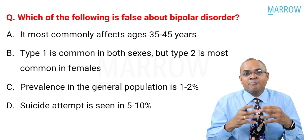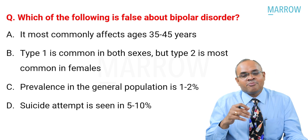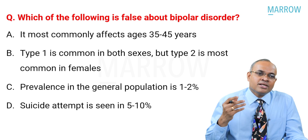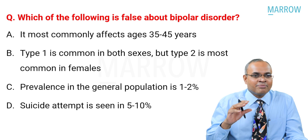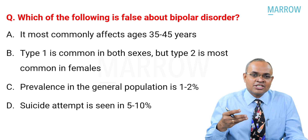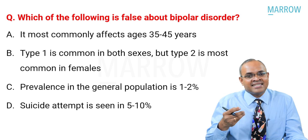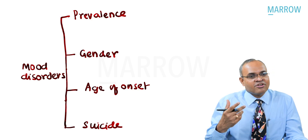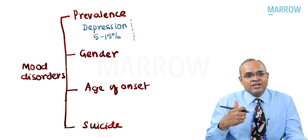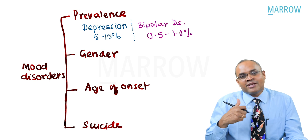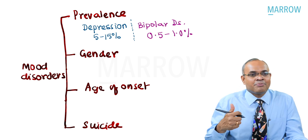Which of the following is false about bipolar disorder? The statements given: it most commonly affects age group 35 to 45; type 1 is common in both genders while type 2 is most common in females; prevalence in the general population is about 1% to 2%; suicide attempt is about 5 to 10%. Prevalence of bipolar disorder is actually about 0.5 to 1% in the general population, while depression affects 5 to 15%.